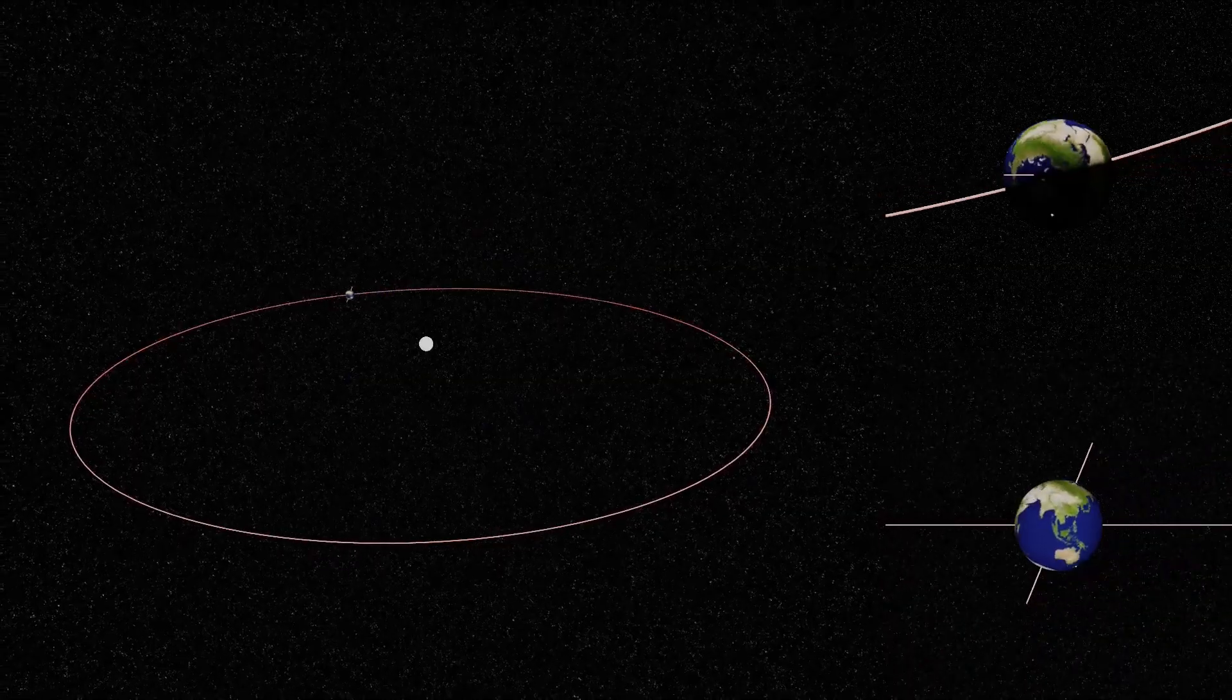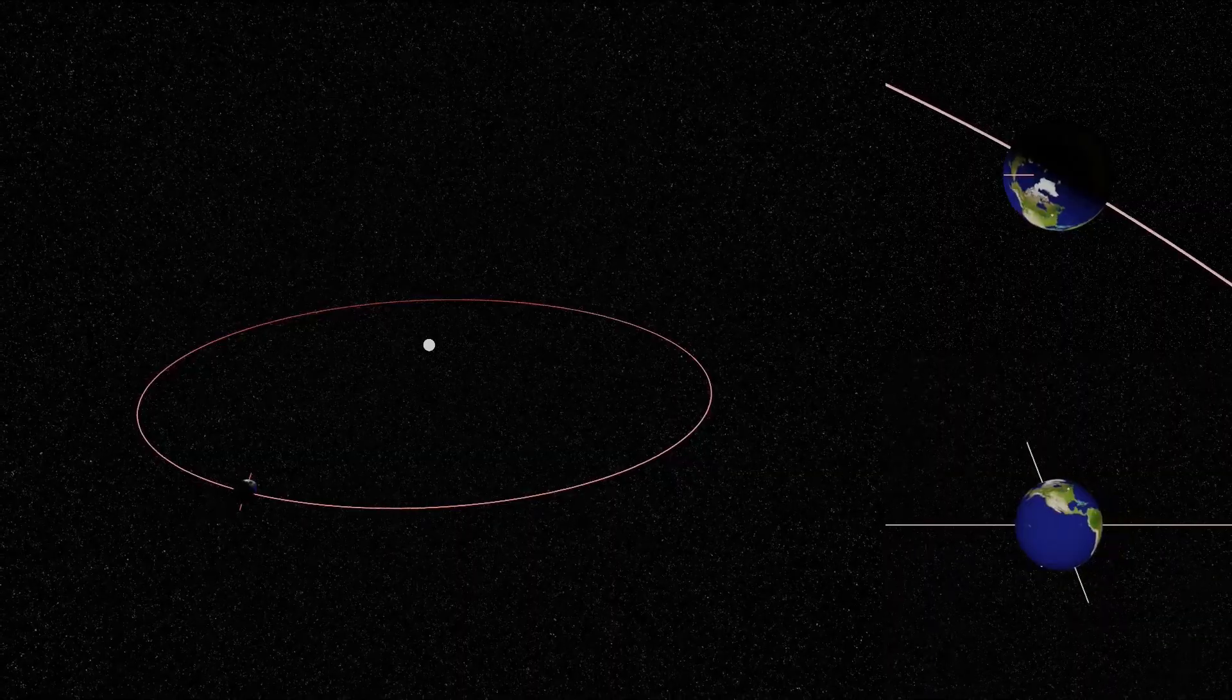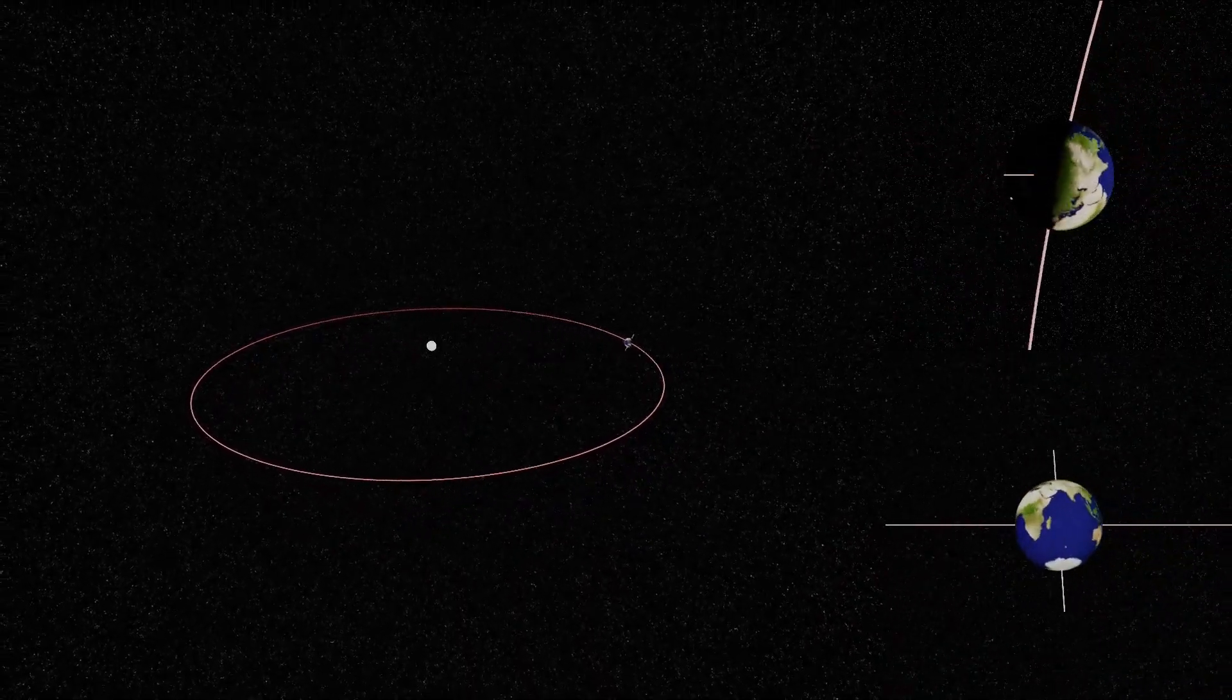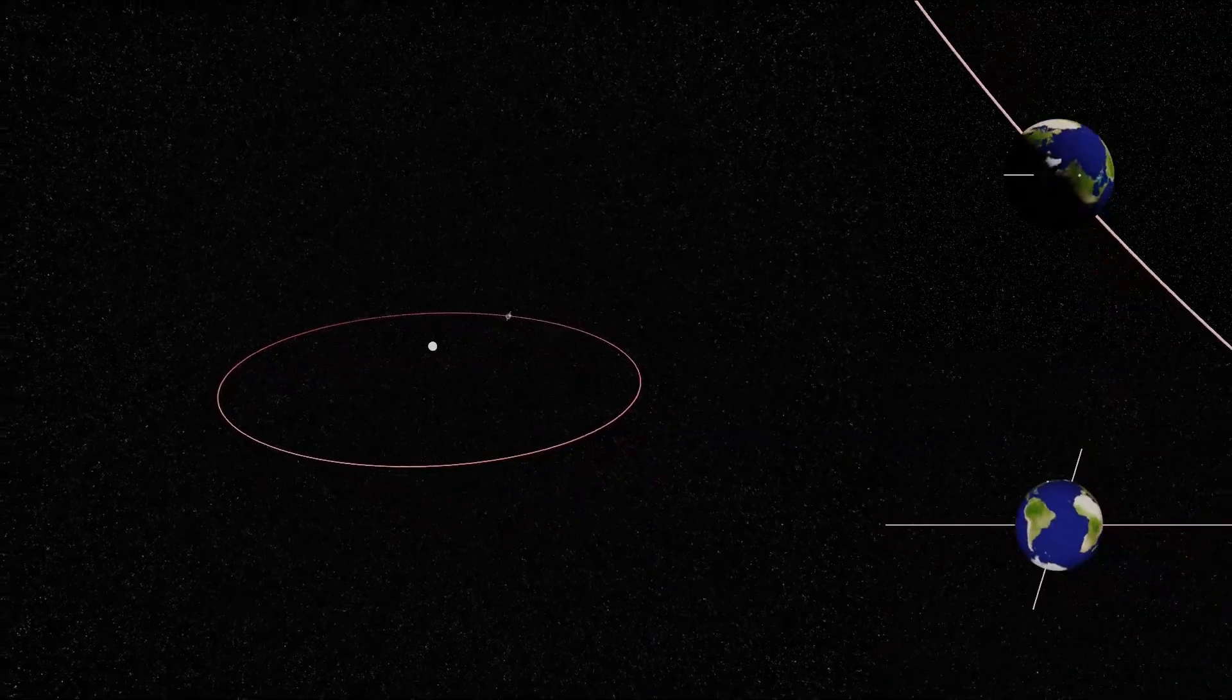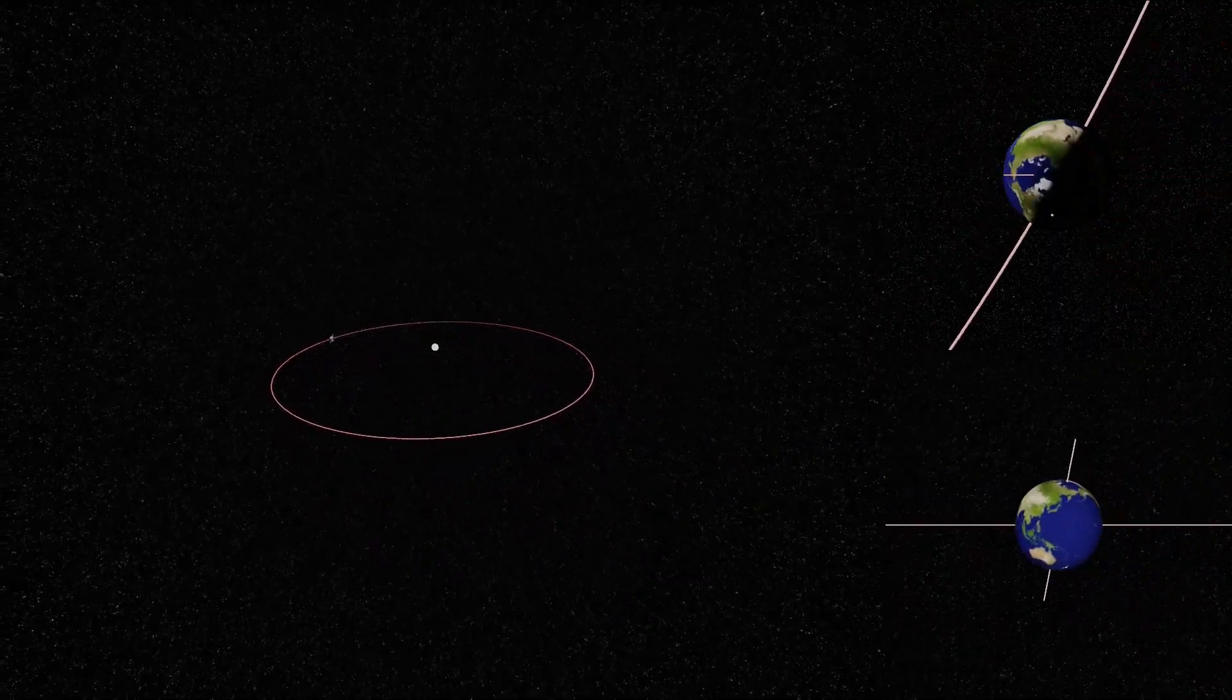Moving forward, the seasons continue their cyclic pattern in both hemispheres. As we've witnessed, they consistently unfold in opposite fashion, all thanks to the interplay of Earth's tilt and orbit. It's truly a mesmerizing cosmic dance.